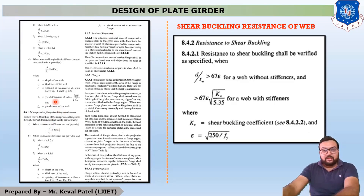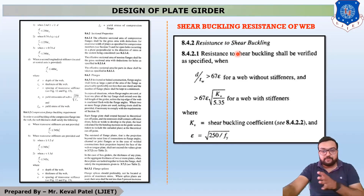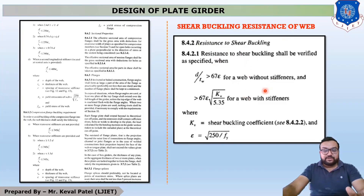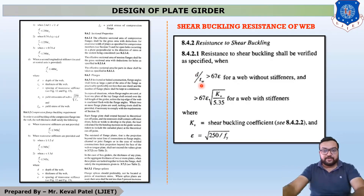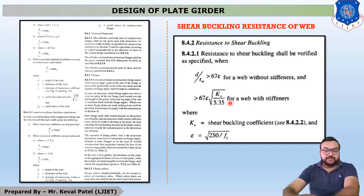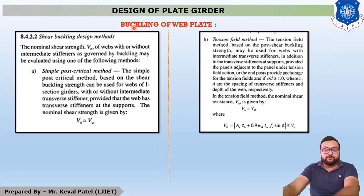The second check is shear buckling resistance of the web. This equation is given on page 61 of IS 800-2007. The criterion is whether the depth-to-thickness ratio D/tw is greater than 67ε or not.